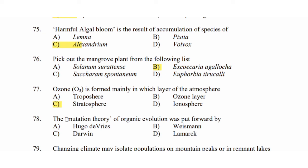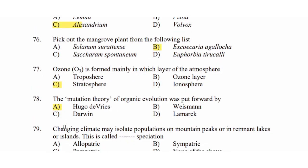Question 78: The mutation theory of organic evolution was put forward by — Option A: Hugo de Vries. Option B: Weismann. Option C: Darwin. Option D: Lamarck. The answer is Option A: Hugo de Vries.